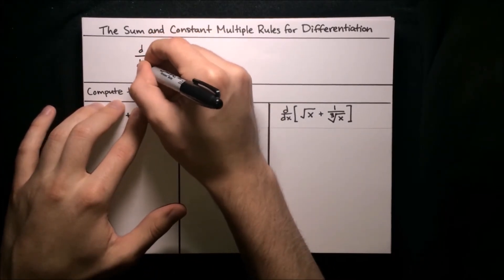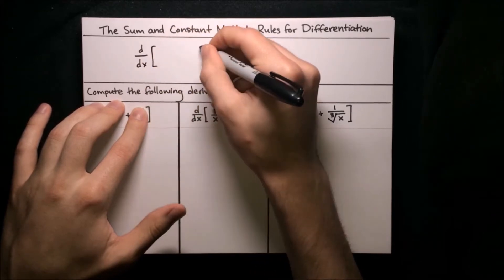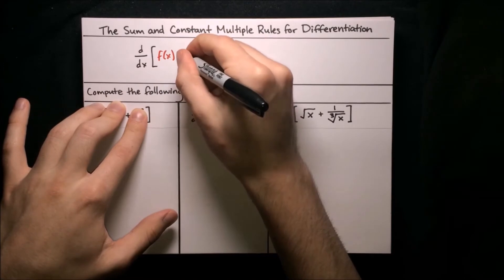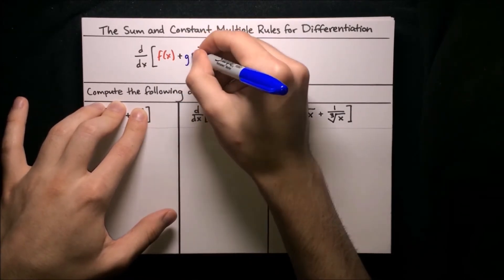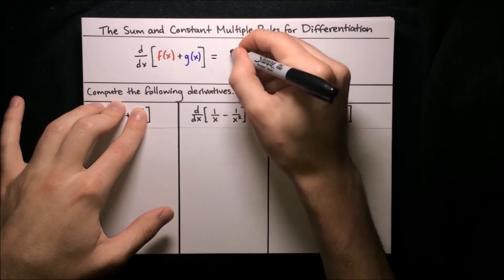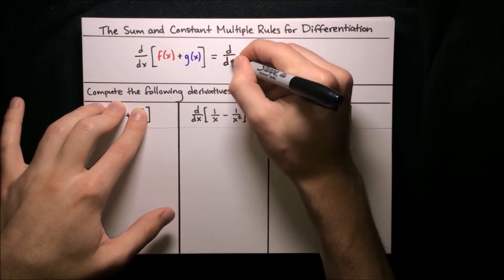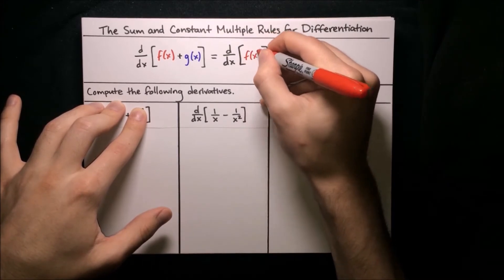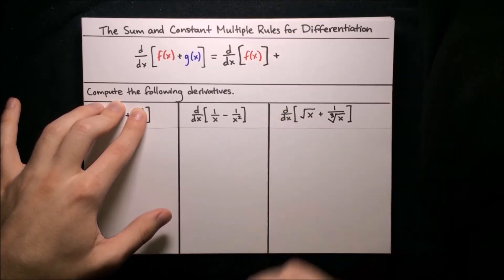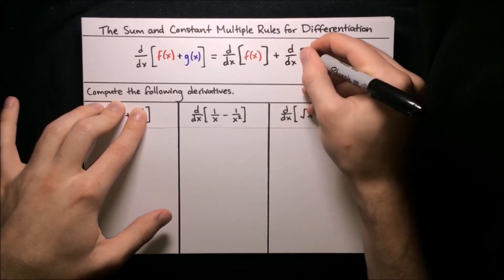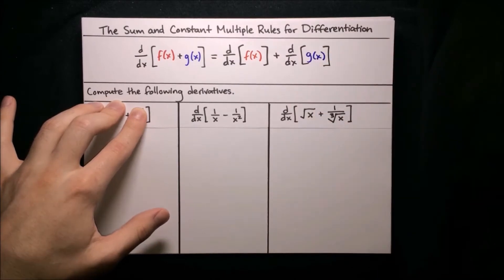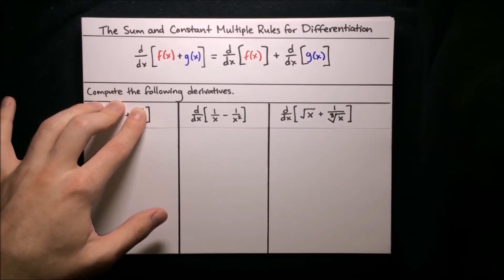The sum rule says that if we differentiate a sum of two functions, say f(x) plus g(x), then the result is just the sum of the derivatives of those functions. Essentially, we can distribute the derivative operator over sums. So whenever we want to differentiate a sum of functions, all we have to do is differentiate each function separately.